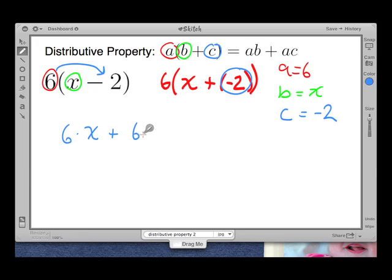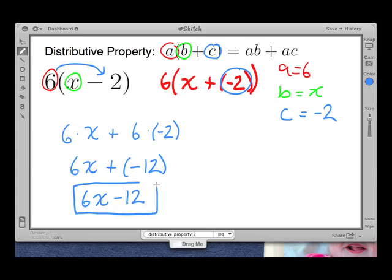Plus 6 times negative 2. And now we can simplify. 6 times x equals 6x. Plus 6 times negative 2 is negative 12. Now we don't like to say 6x plus negative 12. We would like to simplify that one more time to our final answer, which is 6x minus 12. So that's our expanded form for 6 times x minus 2.